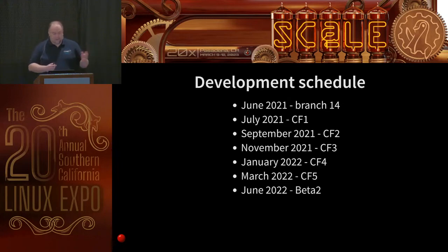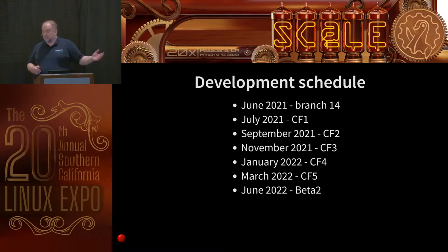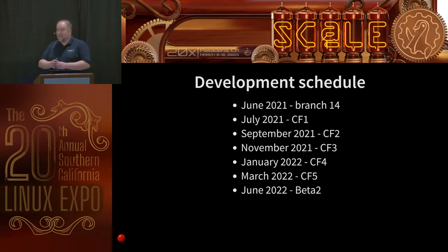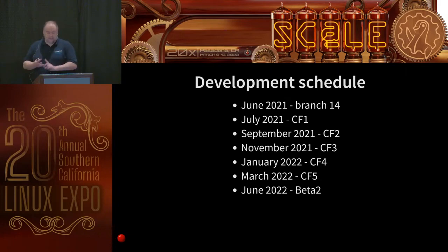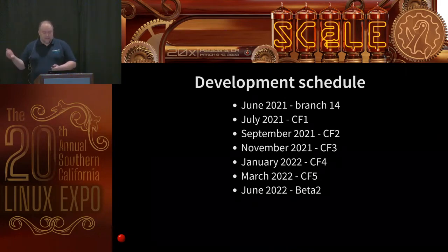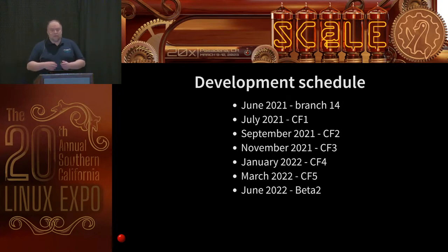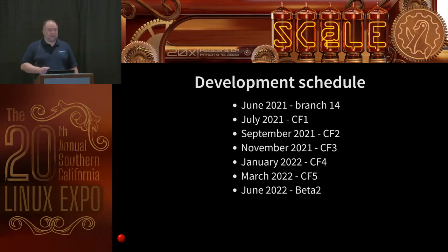Postgres targets a major release once a year. We split up the development schedule into commit fests — a month building features, then a month reviewing and committing them. You can expect a new major version of Postgres approximately in the September–October time frame every year. I usually split these presentations into DBA and administration features, SQL and developer features, backup and replication, and of course everyone's favorite: performance.